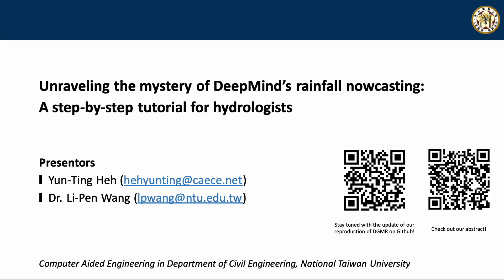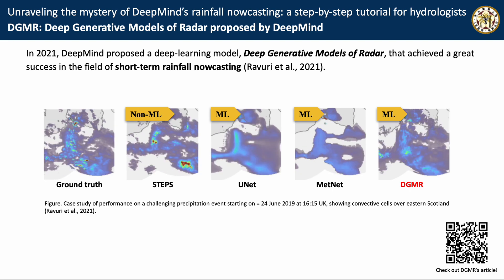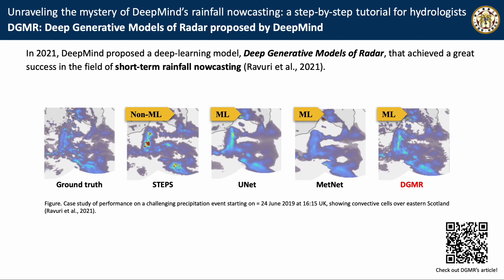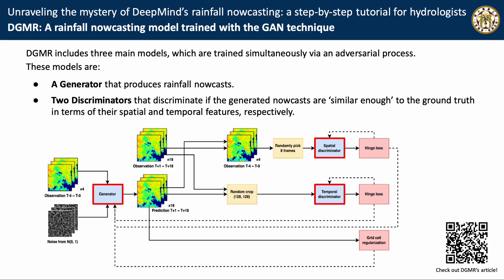In this video, I'll deliver a step-by-step tutorial to unravel the mystery of DeepMind's rainfall nowcasting model. The model we are going to introduce is the generative model of radar proposed by researchers at DeepMind in 2021. This model achieves great success in the field of short-term rainfall nowcasting. The model includes three main models trained simultaneously via an adversarial process: one generator to produce rainfall nowcasts, and two discriminators to discriminate if the generated nowcasts are similar enough to the ground truth in terms of their spatial and temporal features.